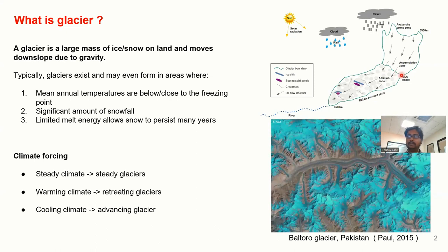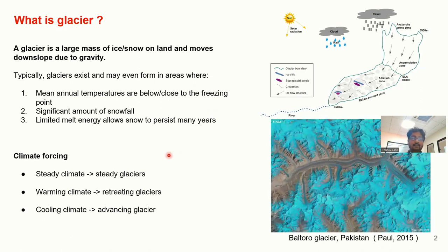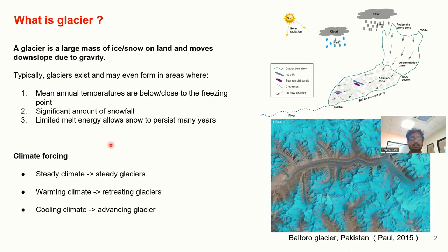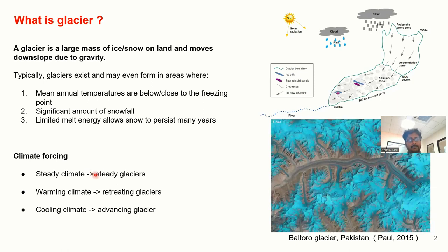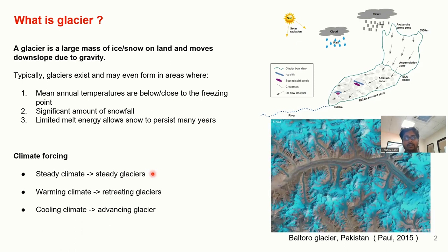The position of the ELA is determined by the local climate and the topography. As the existence of glaciers depends on temperature and snowfall, in that way the glacier responds to climate change. In a steady climate, the glacier remains steady. In a warming climate, the glacier retreats, or in a cooling climate, the glacier advances.